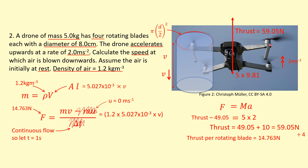Substituting into the momentum equation, force = density × cross-sectional area × v × v = density × area × v². Joining the numbers together gives force = (6.032 × 10⁻³) × v². Dividing both sides by 6.032 × 10⁻³ and taking the square root gives the minimum speed at which air must be pushed downwards: 50 m/s.